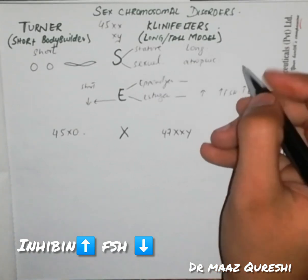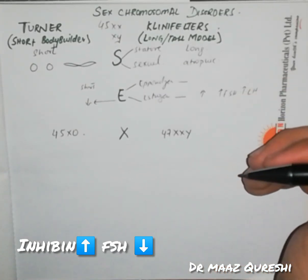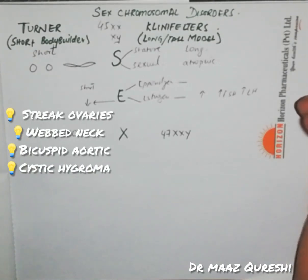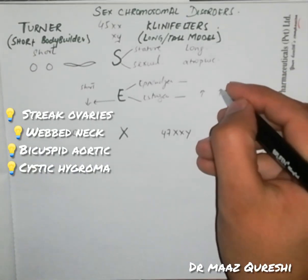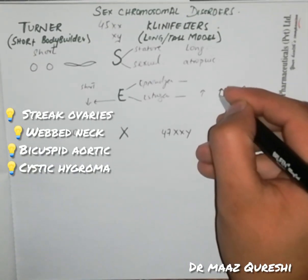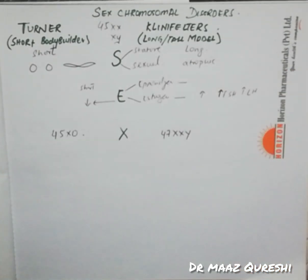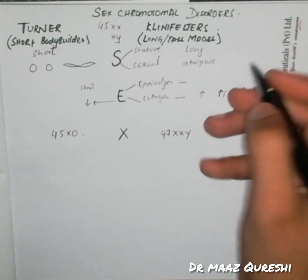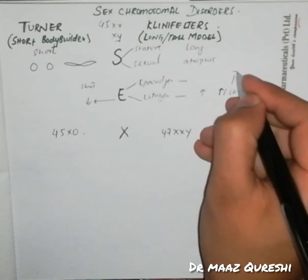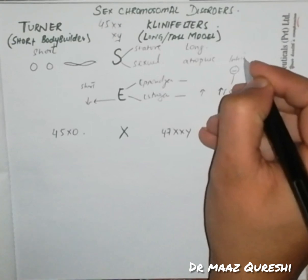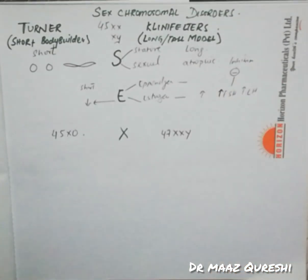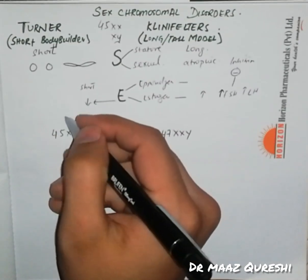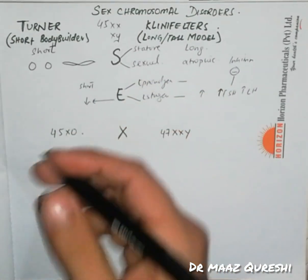In Klinefelter's, there is pathology in the seminiferous tubules. These tubules do not produce inhibin. Inhibin normally inhibits FSH, so when inhibin is not produced, FSH becomes high. The damaged seminiferous tubules also lead to increased estrogen. In Turner's, estrogen is low and there are male-type characters present.